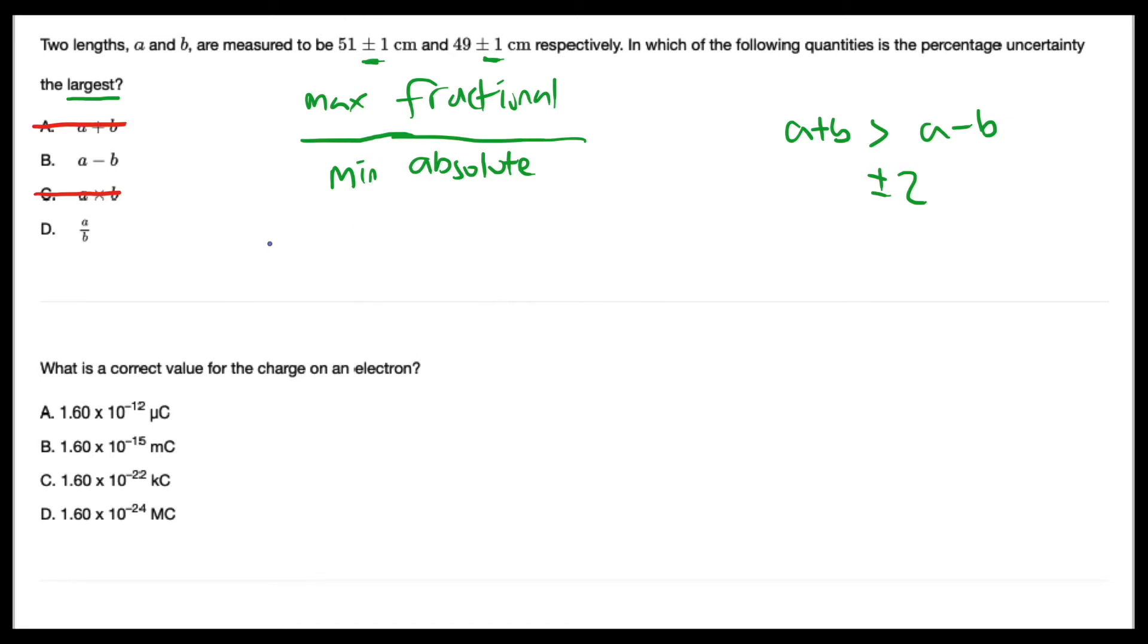So for B, A - B, the best estimate is going to be equal to 51 - 49 = 2. And for D, it's equal to 51 over 49, which is approximately equal to 1 point something.